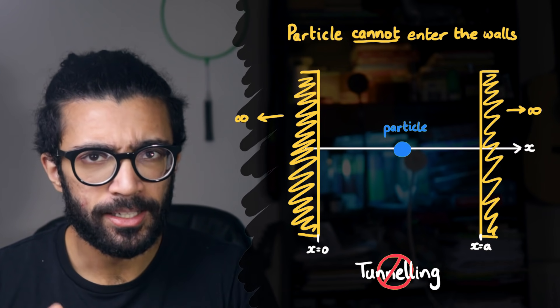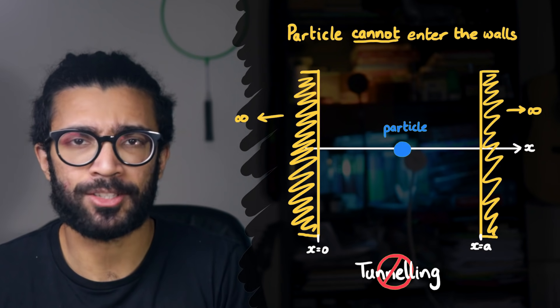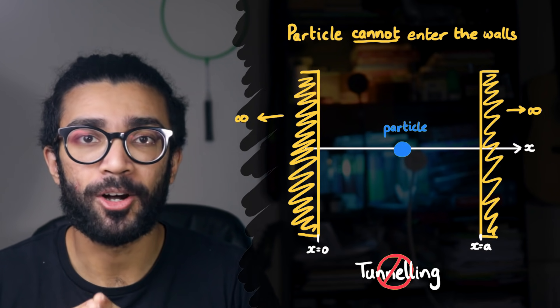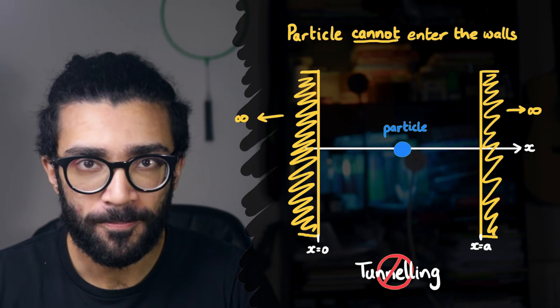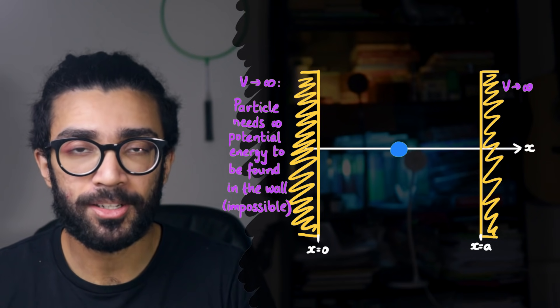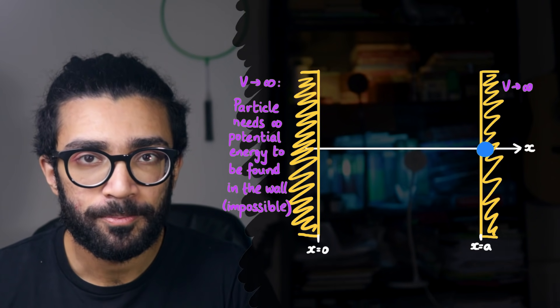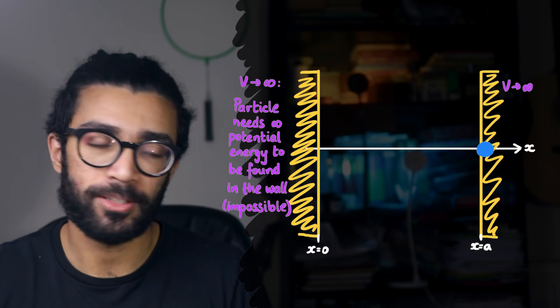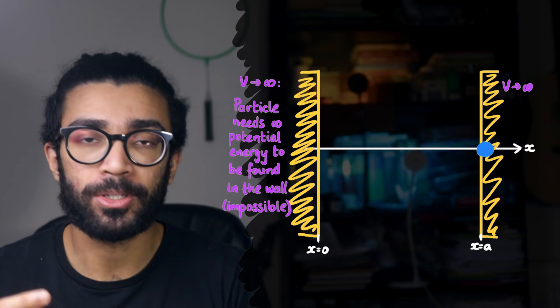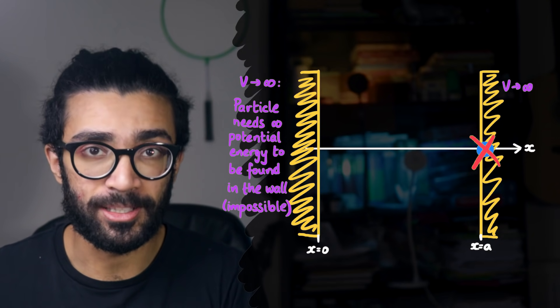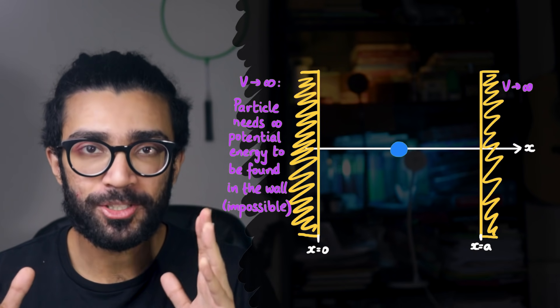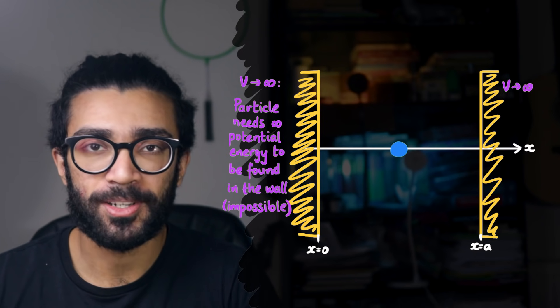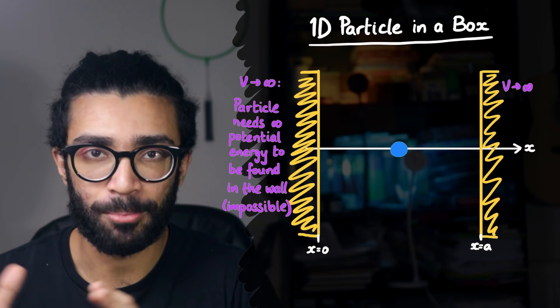Really, though, these infinitely thick, impenetrable, solid-ass walls are just one way of getting what we're actually aiming for. A region of space where the potential is infinite. Which, in simple terms, means that the potential energy of our particle would have to be infinite in order for our particle to be found in those regions. So again, the same idea. Our particle cannot be found within or beyond these walls. It can only be found between the walls. And this setup is known as the one-dimensional particle in a box.